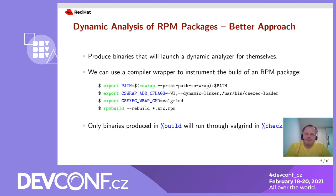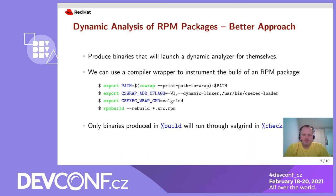And here comes the innovation. We can make the RPM build produce binaries that will automatically launch a dynamic analyzer for themselves each time the binaries are executed. Thanks to compiler wrappers we developed originally for static analyzers, it is really easy as you can see in this example. The first line inserts a compiler wrapper into the search path in front of the real compiler. The second line makes the wrapper append a custom compiler flag, which is in fact a linker flag. Finally, the third line causes all the binaries produced in the build section to run through Valgrind when they are executed in the check section. This is exactly what we needed.